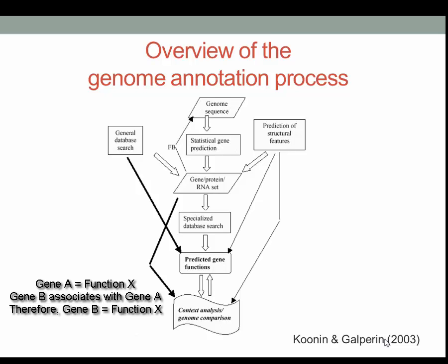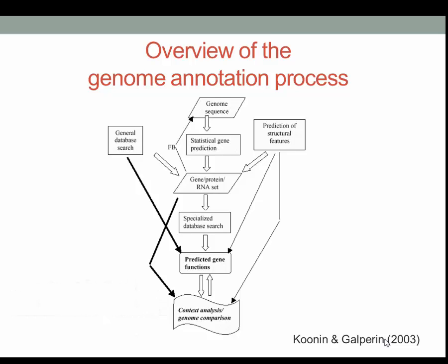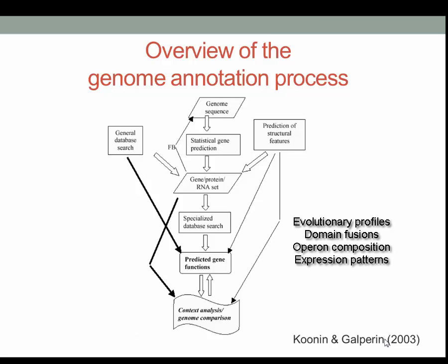In other words, if gene A is involved in function X, and we obtain evidence that gene B functionally associates with gene A, then B is probably also involved in function X. More specifically, context in comparative genomics pertains to evolutionary profiles of protein families, domain fusions and multi-domain proteins, looking for gene adjacency in genomes and operon composition, and expression patterns.